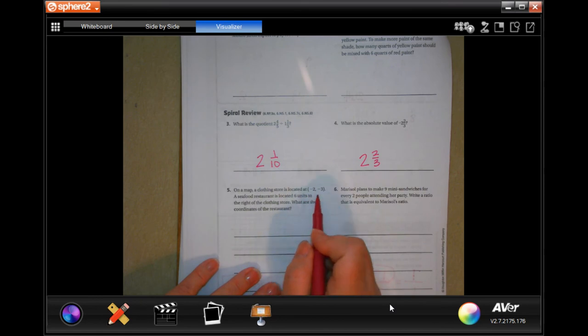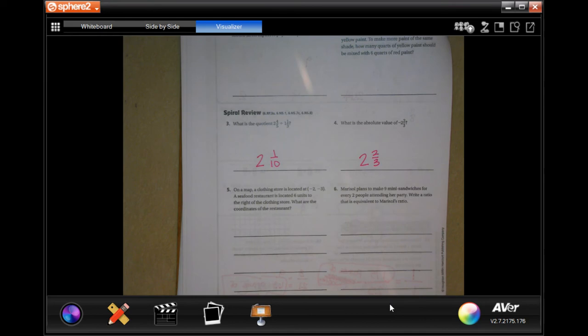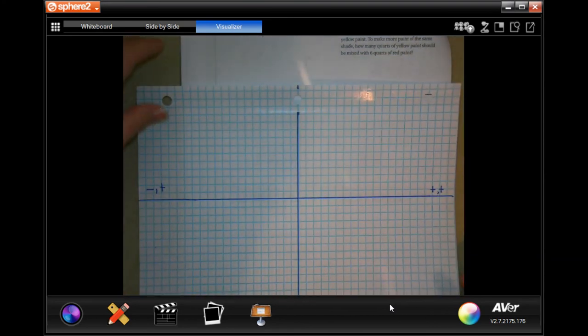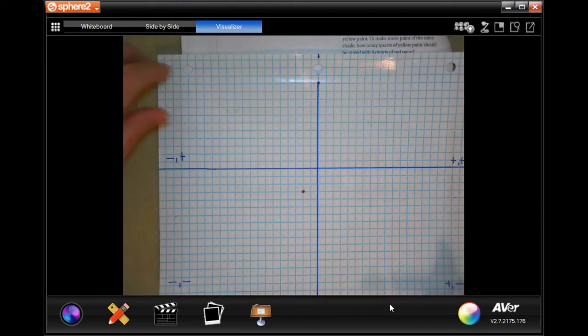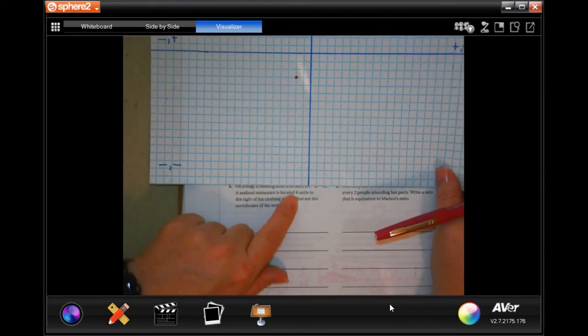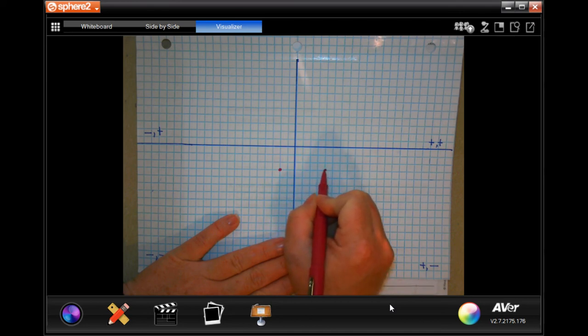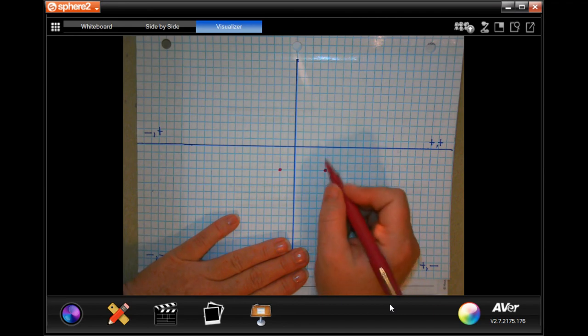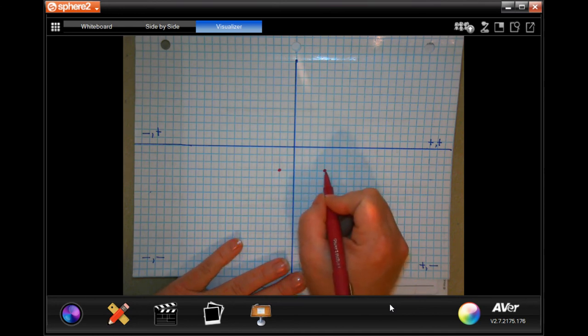On a map, a clothing store is located at negative 2, negative 3. The seafood restaurant is located 6 units to the right of the clothing store. What are the coordinates of the restaurant? So negative 2 and negative 3. 1, 2, 1, 2, 3. That's the clothing store. So, it just says the seafood restaurant is located 6 units to the right of the clothing store. So, we're going to go right 6 times. 1, 2, 3, 4, 5, 6. Now, there's no change in elevation. So, there's no change on the y axis. Just the x.